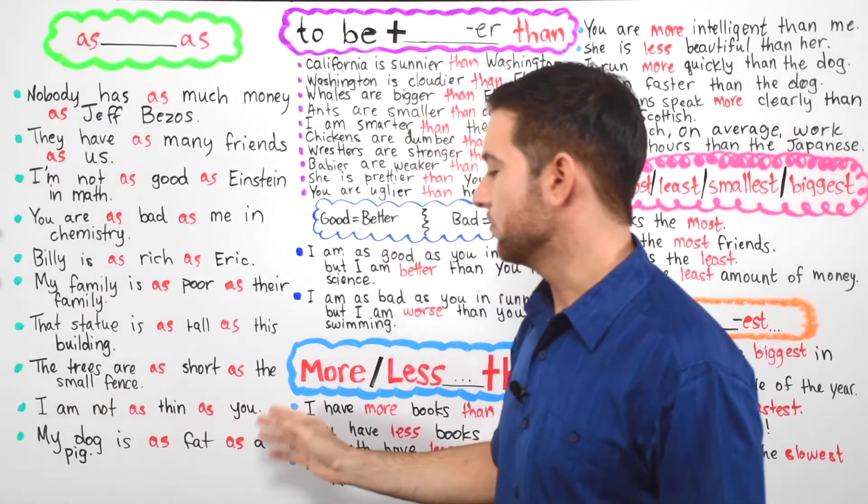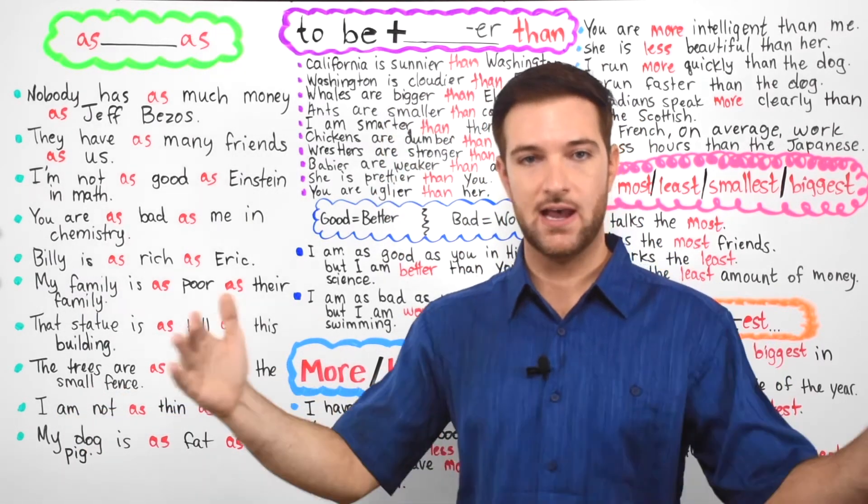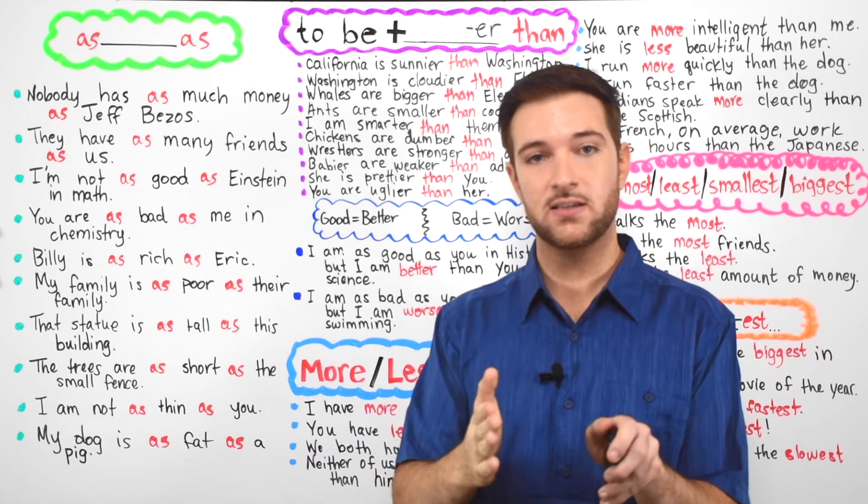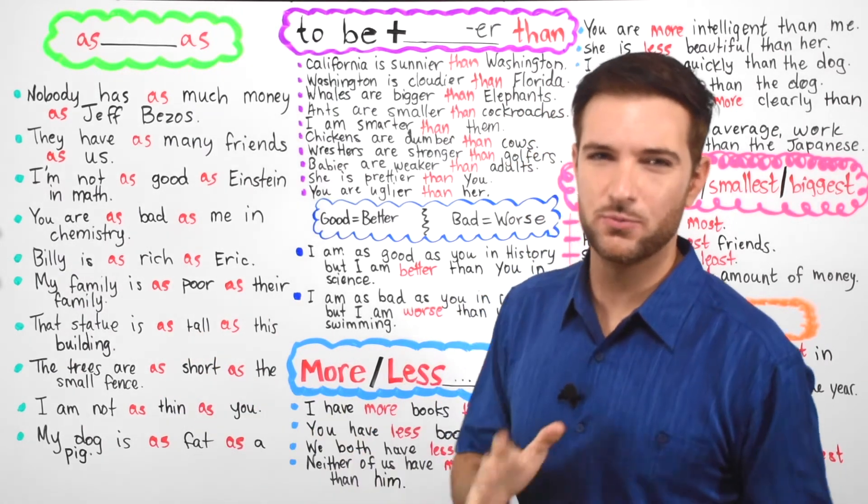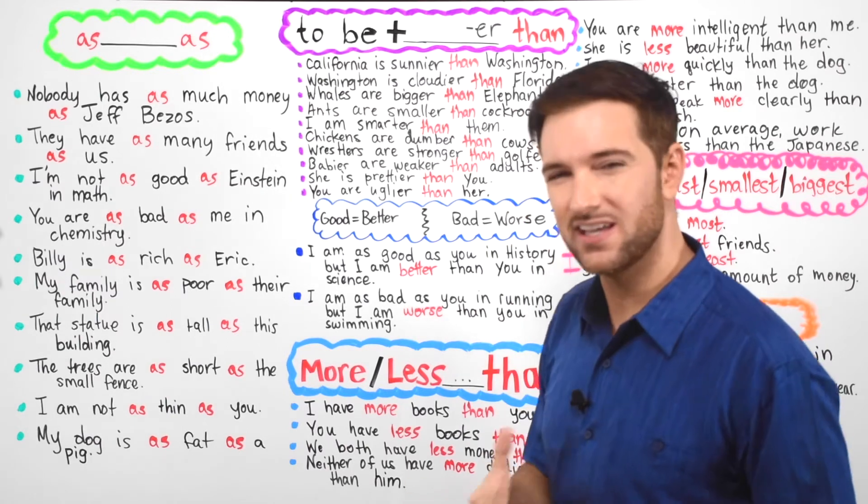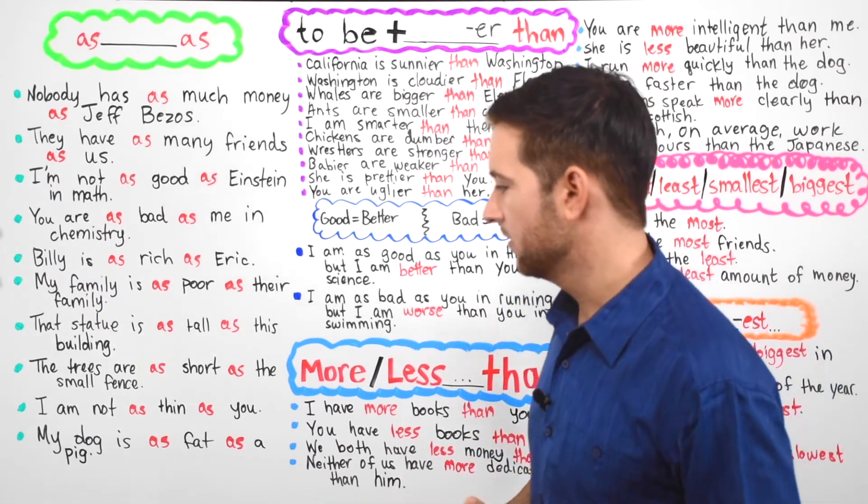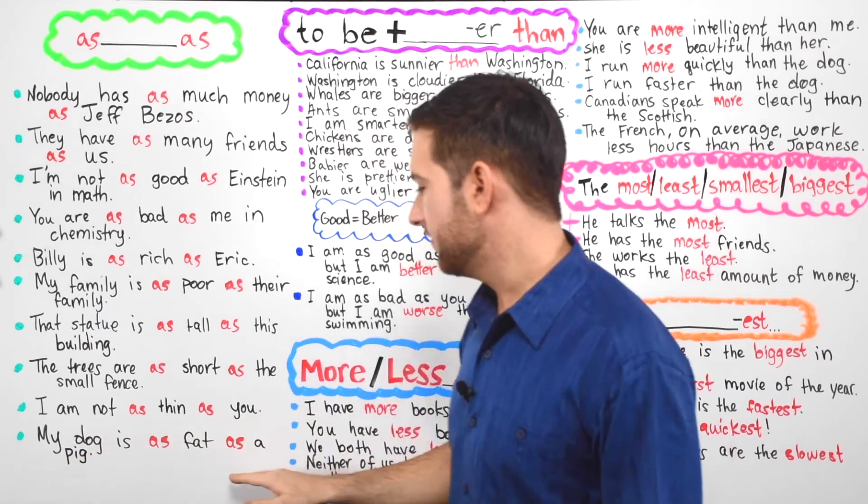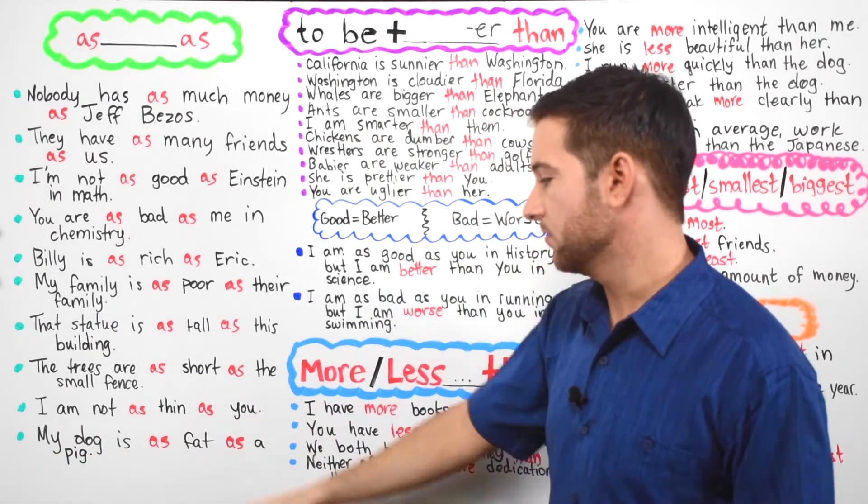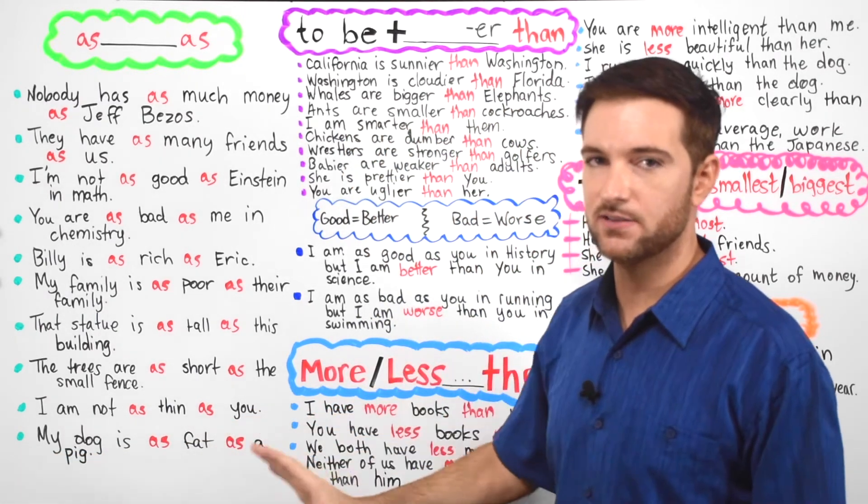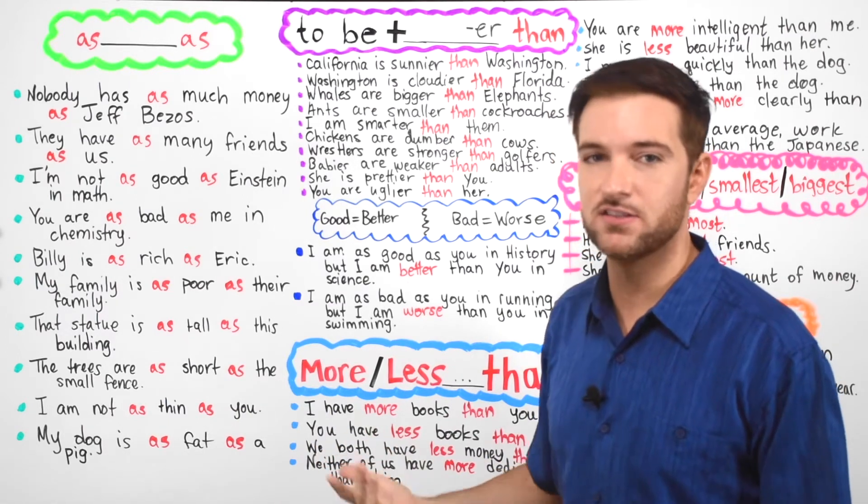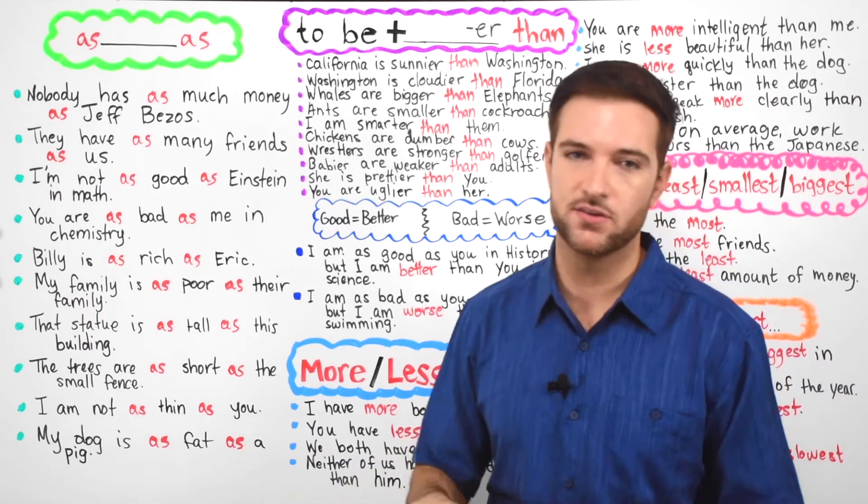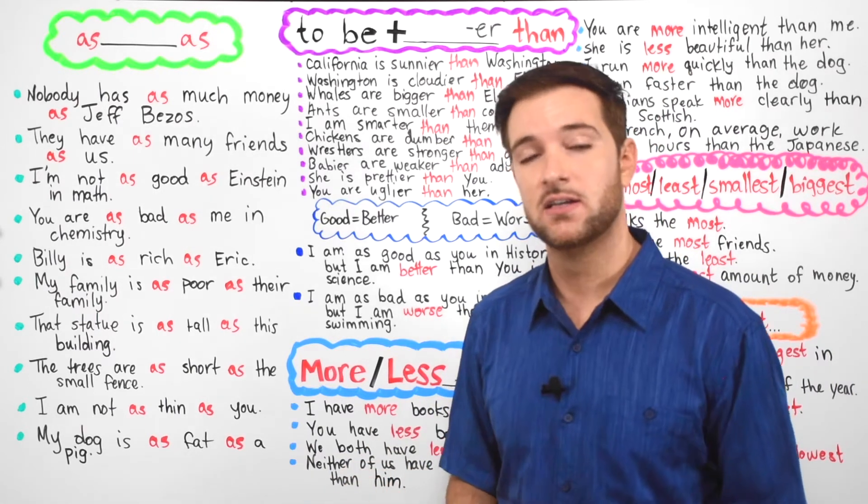I'm not as thin as you. And then fat or we say skinny and then you can also say chunky, but we avoid these words. We don't say those words because we want to be polite to people. My dog is as fat as a pig. So fat, probably not a super polite word to say with people, but you can make comparisons using animals or other things. You can use that word fat.